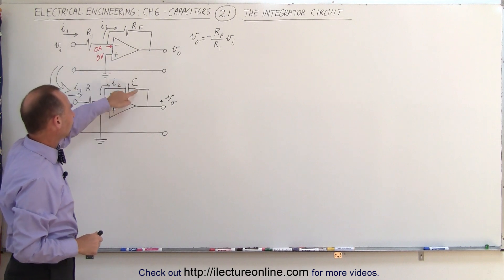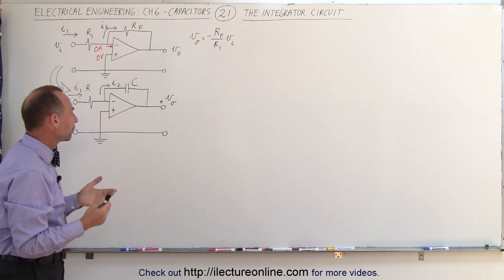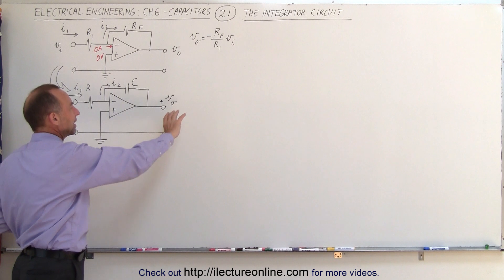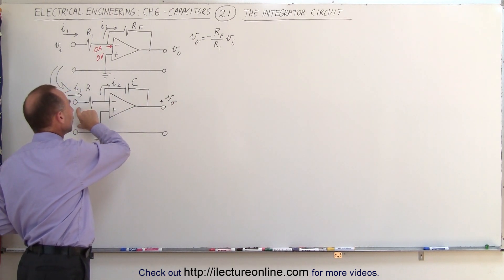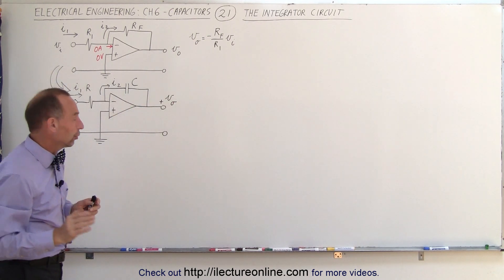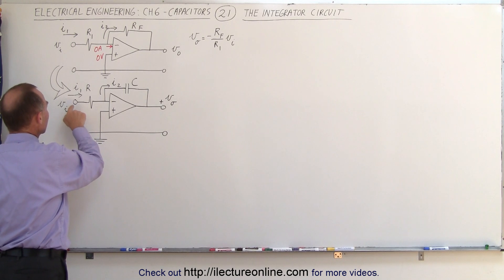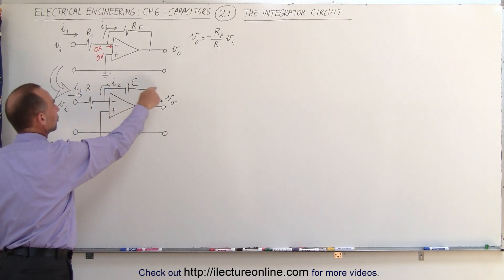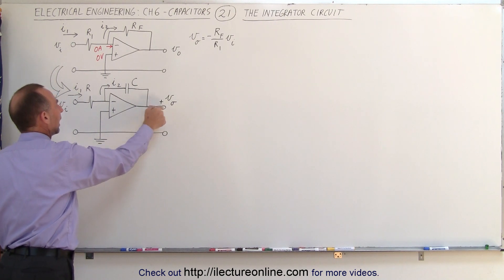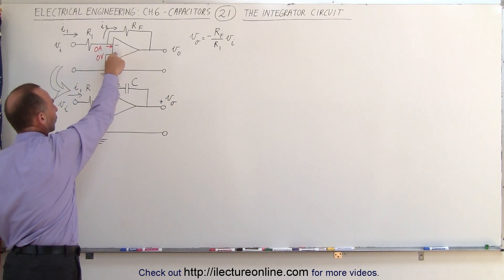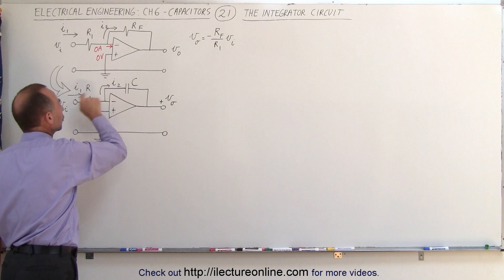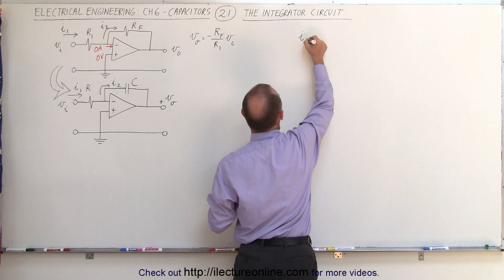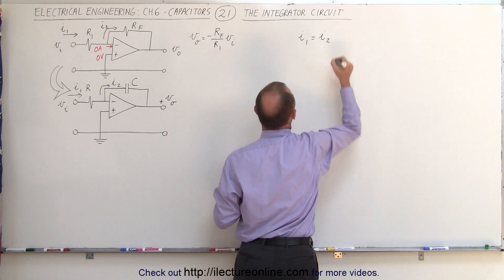So when we replace that resistor with a capacitor, what do we get? To find out how to relate the output voltage to the input voltage we're going to keep track of the currents. We have a current from the input voltage to the input signal, and then a current from the input signal to the output voltage. Since there's no current flowing into the amplifier, these two currents must be equal — I1 is equal to I2.